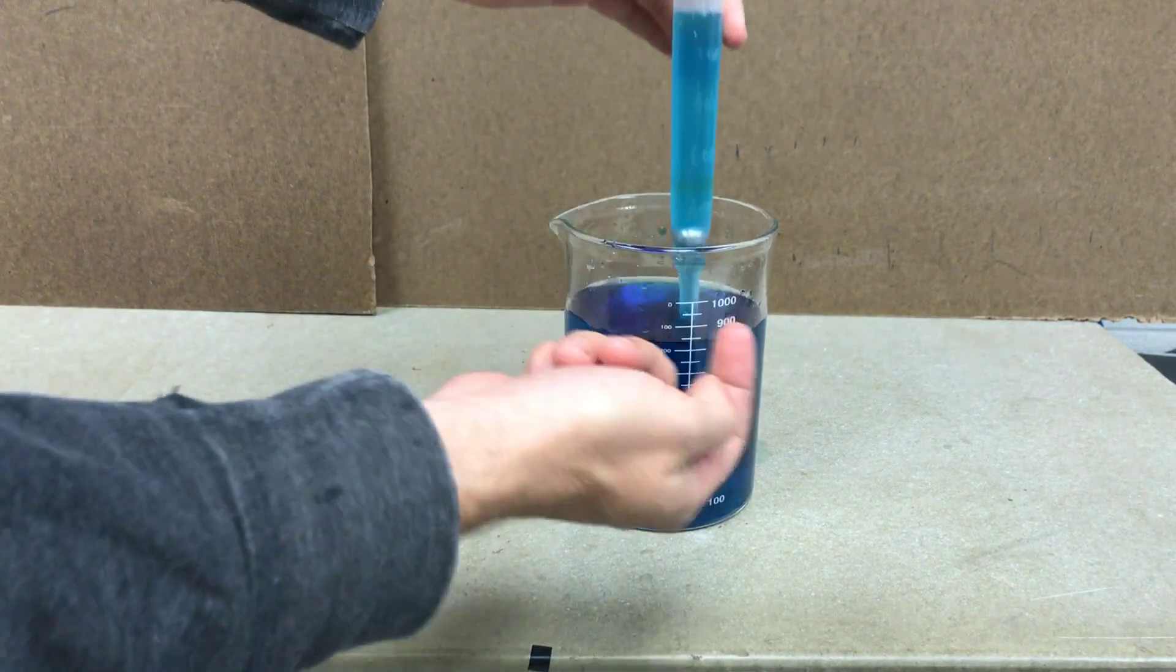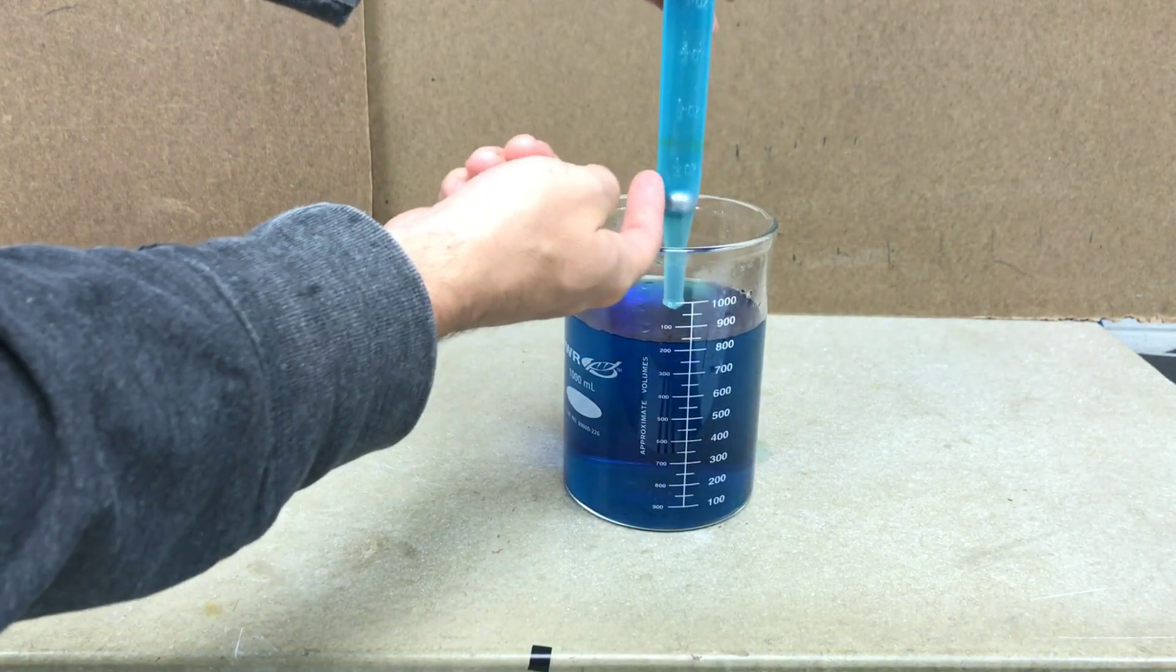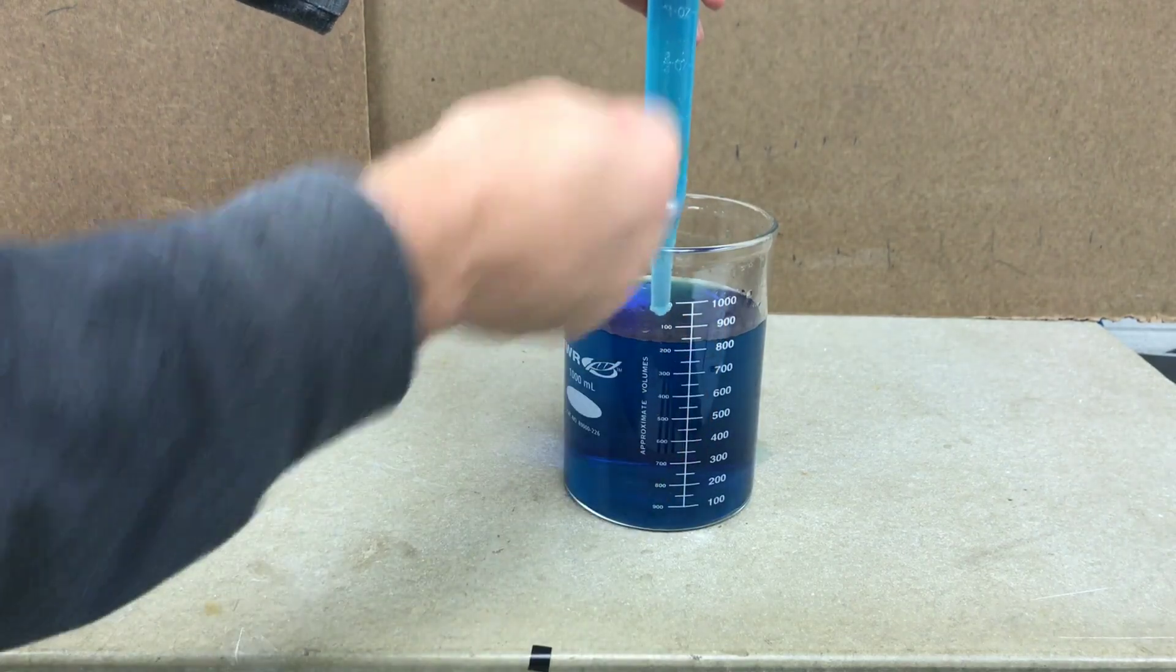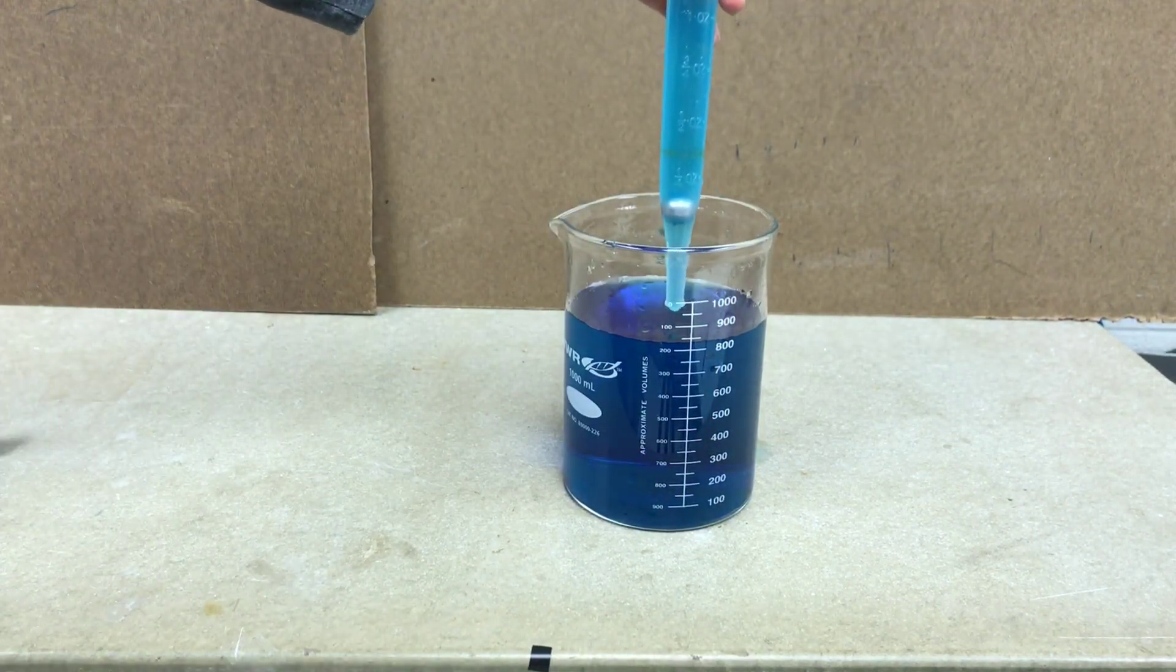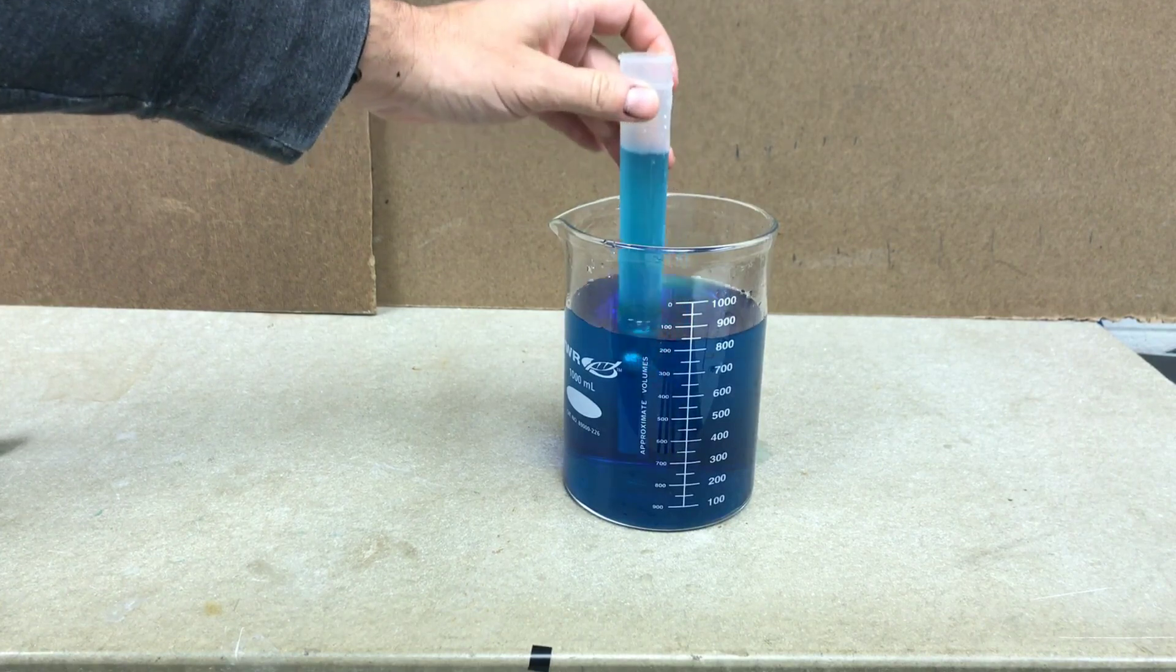See? So as I push down on the tube, the ball gets shifted up and water comes through. But right here, the ball's stuck and the water doesn't go through. So I could keep doing this and make a little pump.